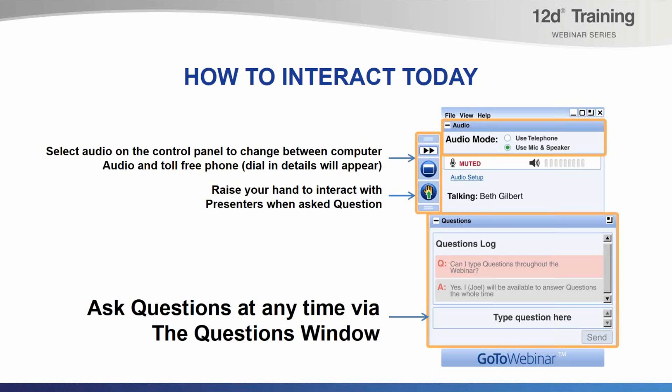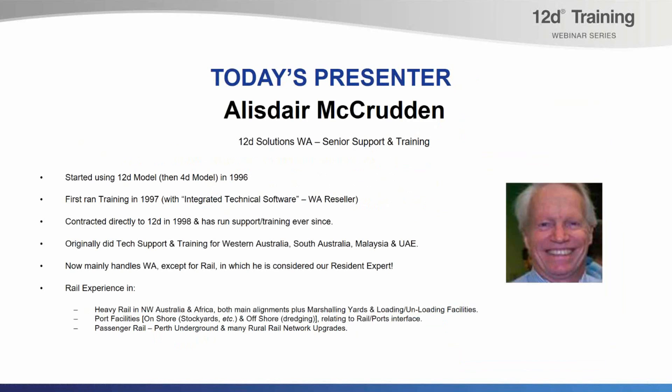At the end I'll also read out some of your questions to the presenter for his insights if there's time. Today's webinar, 12D Track Part 1, will be presented by Alistair McRudden, who first started using 12D model — or rather 4D model as it was known then — in 1996. From 1997 he ran 12D training courses through a reseller, then in 1998 he commenced contracting directly to 12D and has run our WA support and training ever since. Alistair's vast rail experience includes heavy rail in North Western Australia and Africa, port facilities, passenger rail, the Perth underground, and rural rail network upgrades.